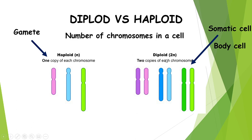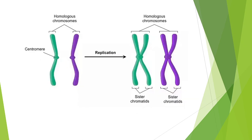A haploid cell is a gamete — any sperm or egg cell. The purpose of meiosis is to move from diploid to haploid. In humans, a haploid cell has 23 chromosomes (n = 23); a diploid cell has 46 (2n = 2 × 23). Make sure you have a good understanding of these terms before we move forward.